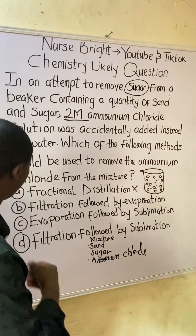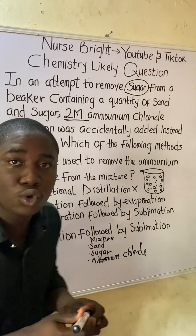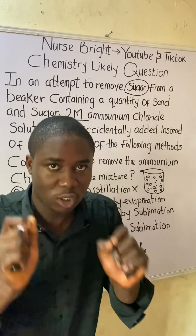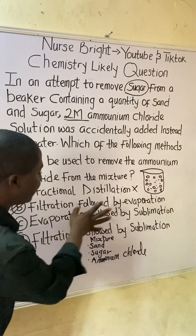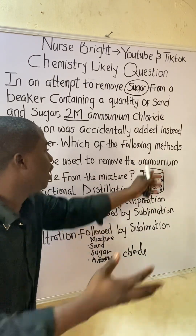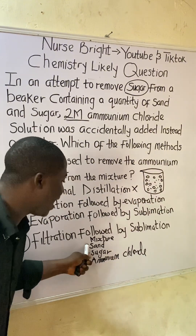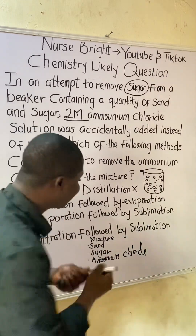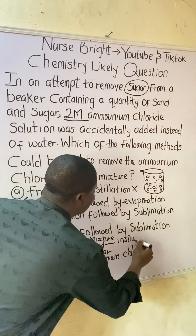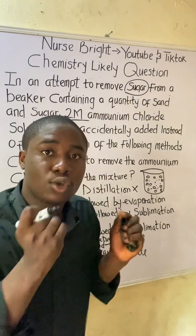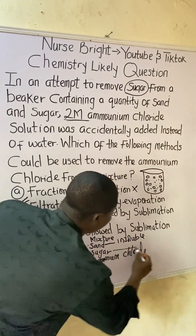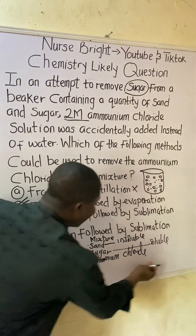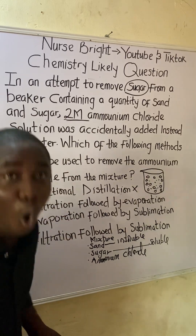The answer is option B: filtration first, followed by evaporation. The mixture at the end contains sand, sugar, and ammonium chloride. Sand is insoluble — it cannot dissolve in water. Sugar can dissolve in water, so sugar is soluble. Sugar and ammonium chloride are both soluble, and together they already form a solution.